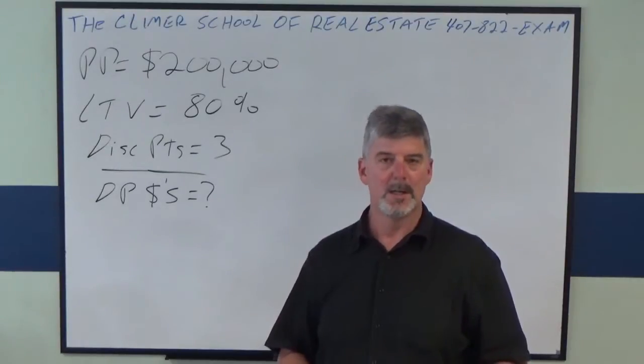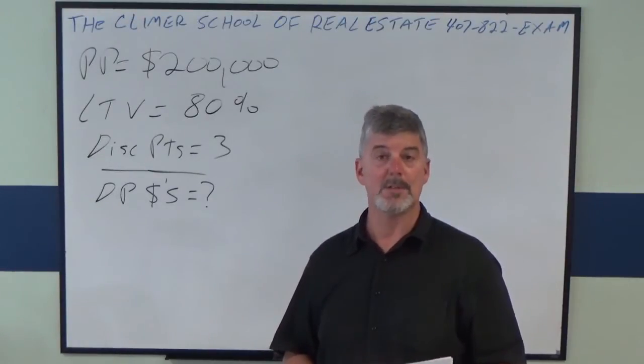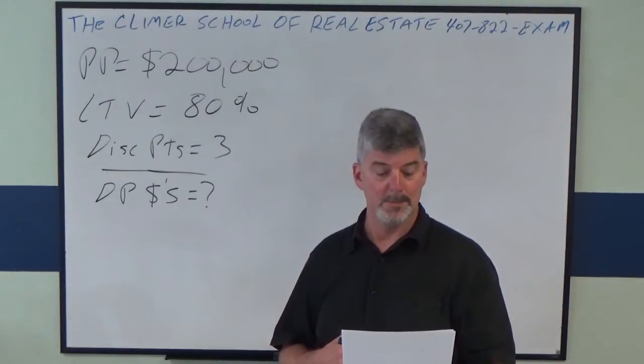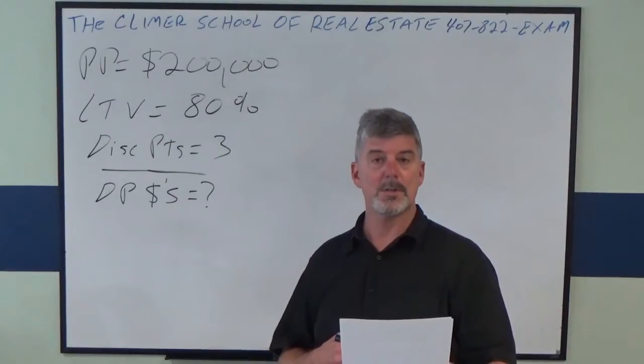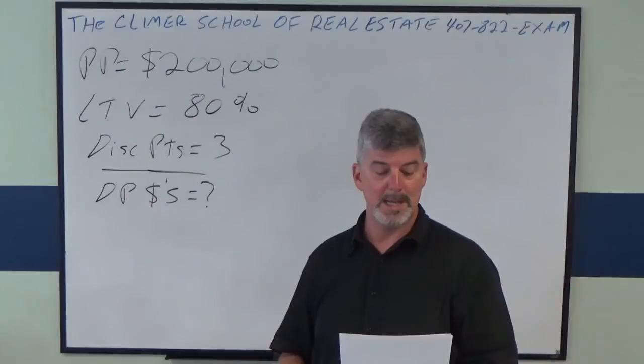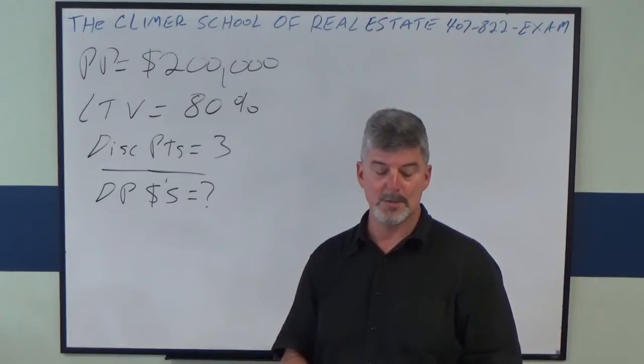Number four says: a buyer is purchasing a home for $200,000. She applies for an 80% LTV conventional loan to purchase a home. Her bank is going to charge her three discount points. How much money will she pay her bank at closing for this loan?